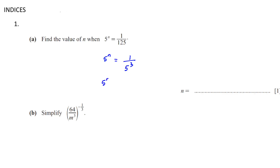There is one very important index rule you should know. If the power is in the denominator and you bring it up, the signs will change. So we write it as 5 to the power of negative 3. Also, if the base is the same, they get cancelled out. So now we are left with n is equal to negative 3.